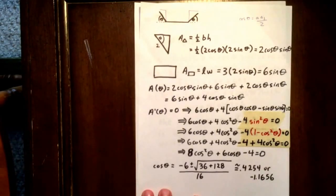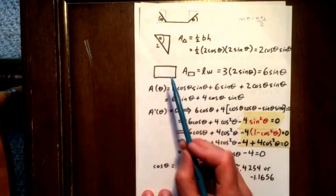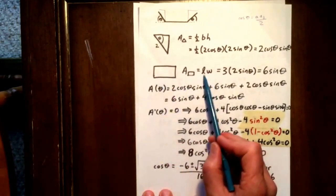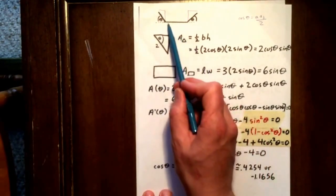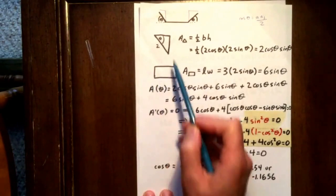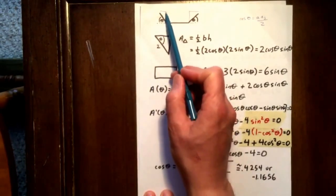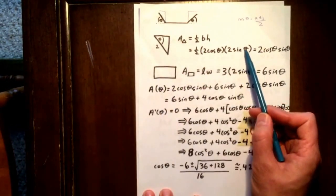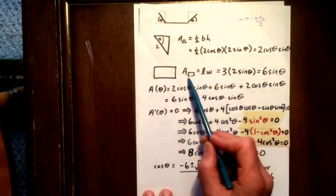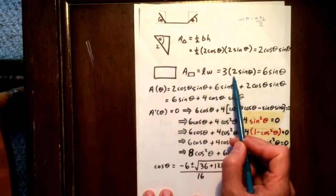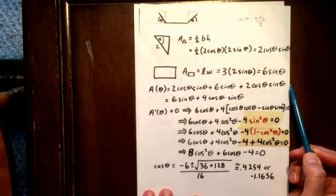The area of the rectangle is just going to be length times width. We know that this length is 3, and we know that this height right here is 2 sine theta. So the area of the rectangle is 3 times 2 sine theta, or 6 sine theta.